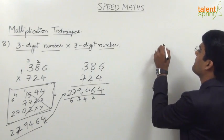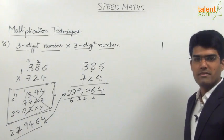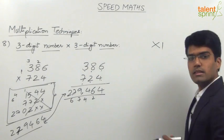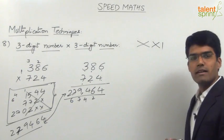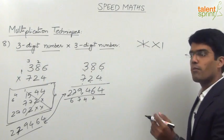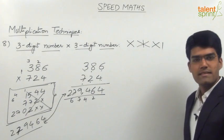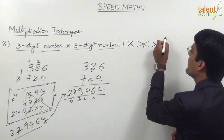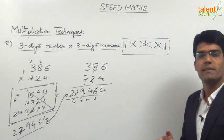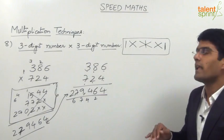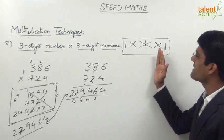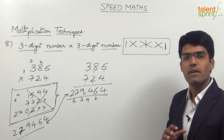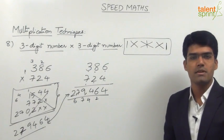We can understand these steps as follows: step one is vertical multiplication of unit places; step two is cross multiplication of units with tens; step three is cross multiplication of units with hundreds plus multiplication of tens places; step four is cross multiplication of tens with hundreds; step five is multiplication of hundreds places. Comparing with two-digit method which had three steps (I × I), three-digit multiplication has five steps (I × star × I) — a pattern to help you remember the procedure.